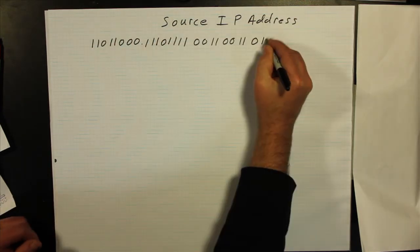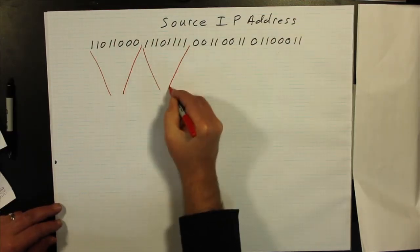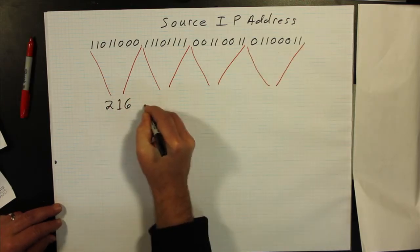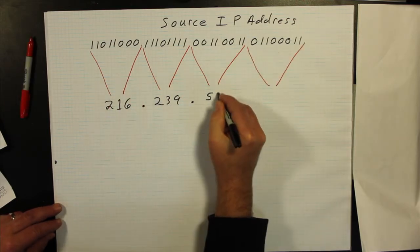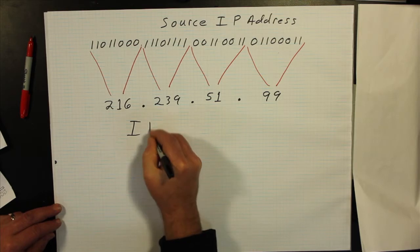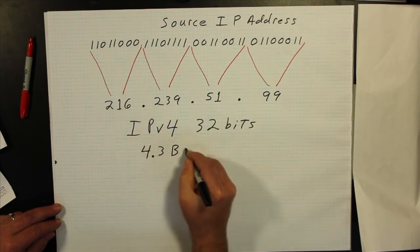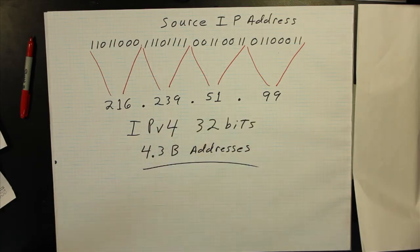The source IP address, as the name implies, is the IP address for the origination device of this IP packet. This is in the form of IP version 4 addresses, which take up 32 bits.